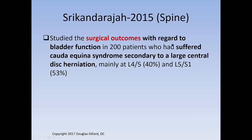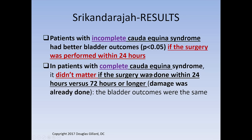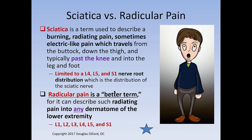Surgical outcomes study — 2015, published in Spine. Studied 200 patients with bladder dysfunction who had cauda equina syndrome secondary to large disc herniation, mainly at L4-L5. Patients with incomplete cauda equina syndrome — numbness and hesitancy — did significantly better regarding catheterization compared to patients who already had leakage and neurogenic bladder. For incomplete cases, surgery within 24 hours meant fewer long-term catheter users. But patients who already had severe neurogenic bladder — it didn't matter whether surgery was at 72 hours or longer, the damage was already done.